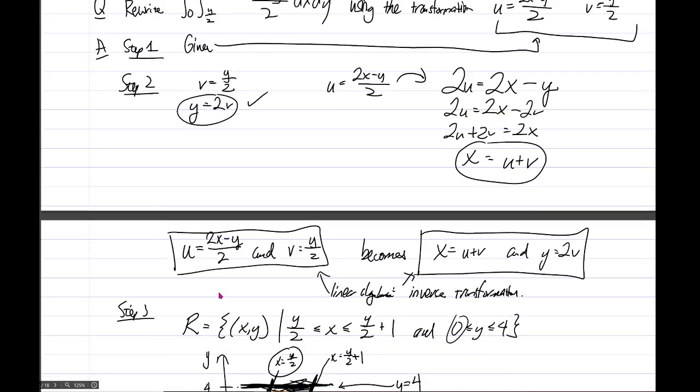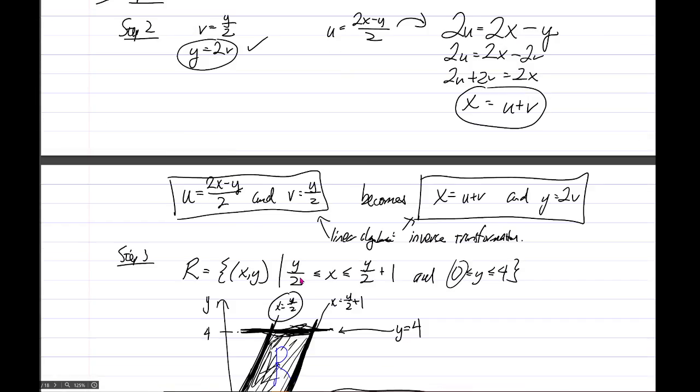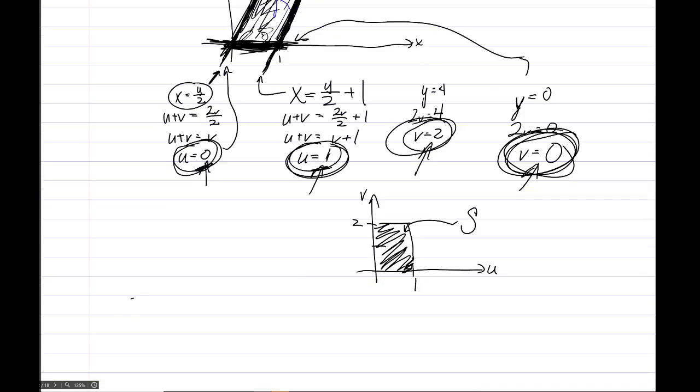All right. Finally, step four, write out the function f. Using, so we have here f, by the way, is 2x minus y over 2, right? f, so step four. f equals, I already forget what it was, 2x minus y all over 2. Oh, let's just say one other thing here, that the region S, it's the set of points U, V, in the U, V plane, where 0 less than or equal to U less than or equal to 1, and 0 less than or equal to V less than or equal to 2.